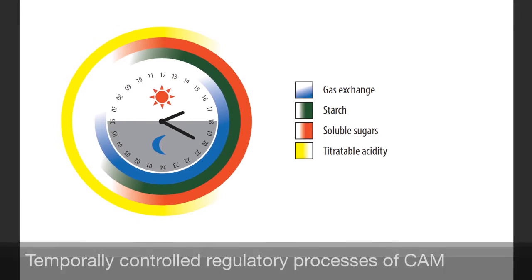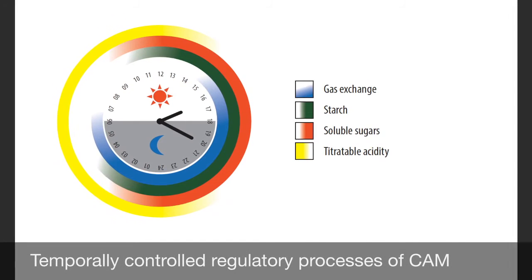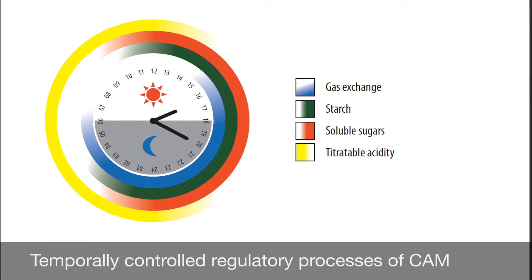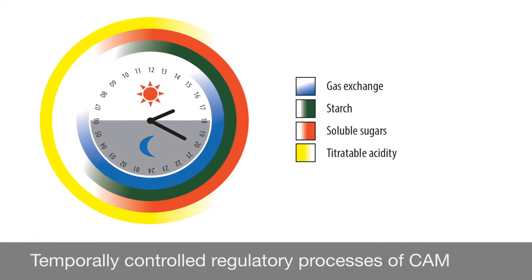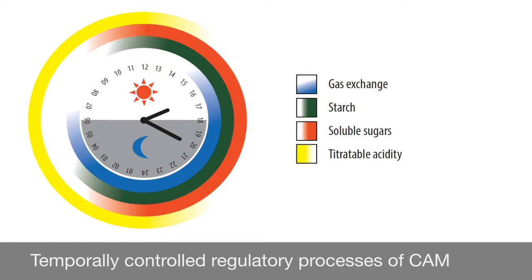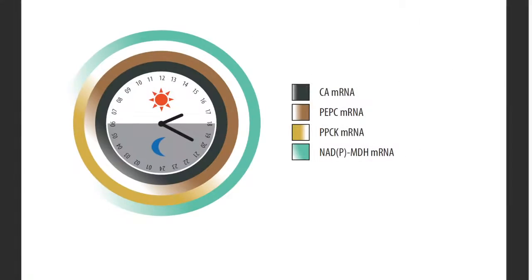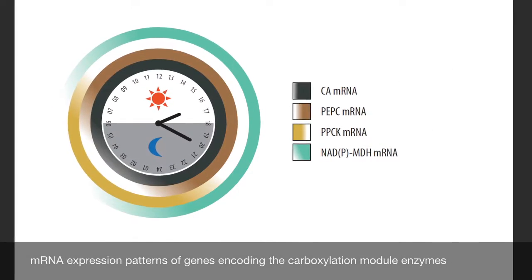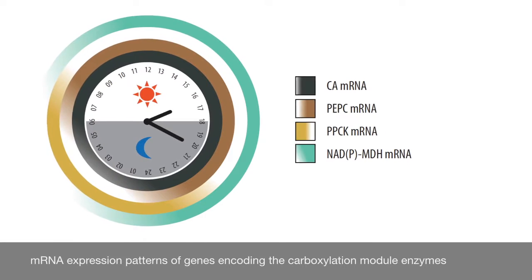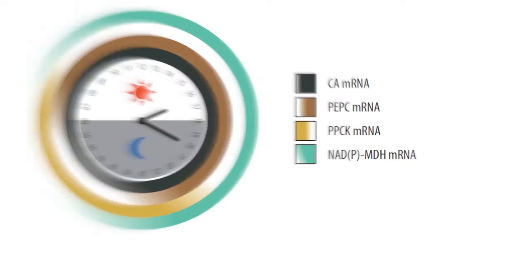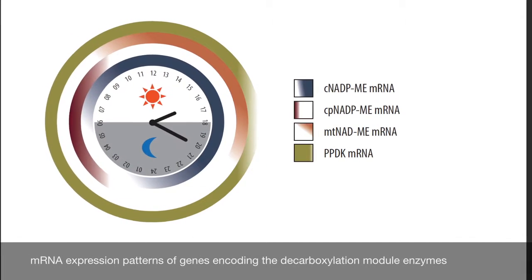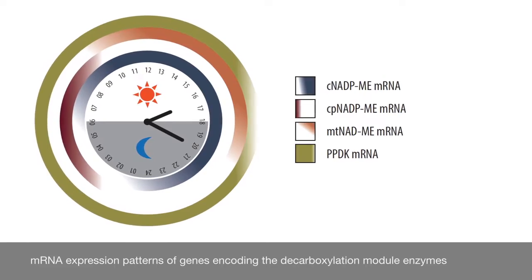Sequence information from these species allows comparative genomic methods and coexpression network modeling approaches to be used to better understand the temporal dynamics of the biochemical and regulatory processes of CAM, such as those shown here, as well as the temporal control of gene modules that encode enzymes responsible for nighttime CO2 uptake and fixation, as well as genes that encode enzymes responsible for daytime decarboxylation and refixation.